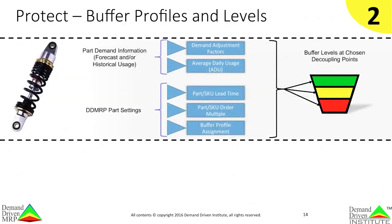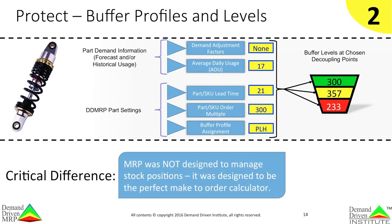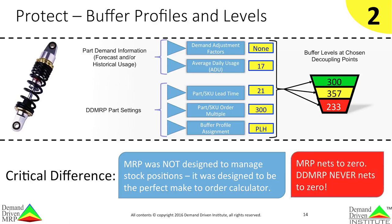The second component of DDMRP is buffer profiles and levels. This is simply building the level of shock absorption at the decoupling point so that it can mitigate variability in both directions. Part demand information based on historical and/or forecasted usage rates is combined with the DDMRP part settings to create a unique color-coded three-zone buffer. Each zone has a distinct purpose and a specific method to calculate it. The critical difference here is that DDMRP was designed specifically for the management of key stock positions. MRP was never intended to manage stock — its intent was to be the perfect make-to-order calculator, negating the need for stock. That is why MRP nets to zero and DDMRP never nets to zero.